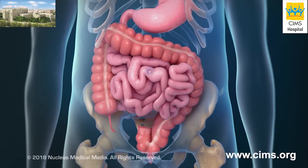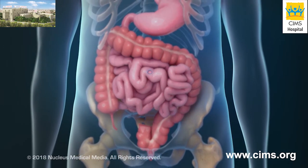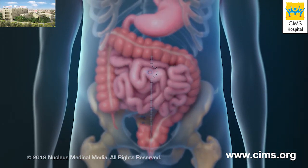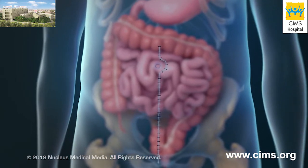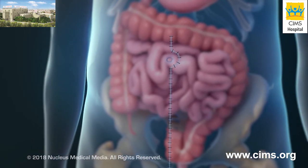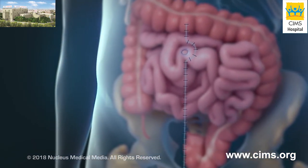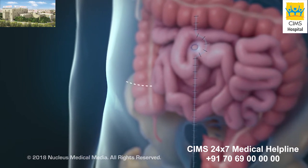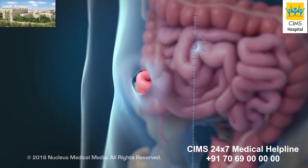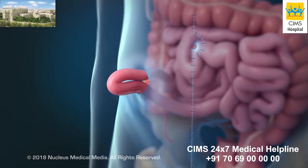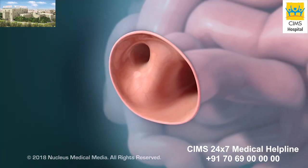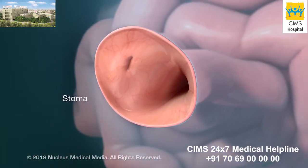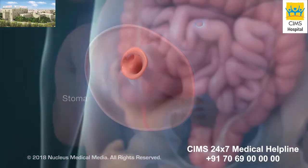At the end of the procedure, the incision in your abdomen will be closed with staples or stitches. At this point, your surgeon will sometimes create a different way for feces to leave your body while the new attachment heals. To do this, your surgeon will make a separate incision in your abdomen and pull a loop of your small intestine through it.